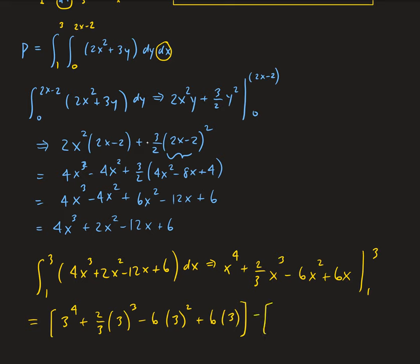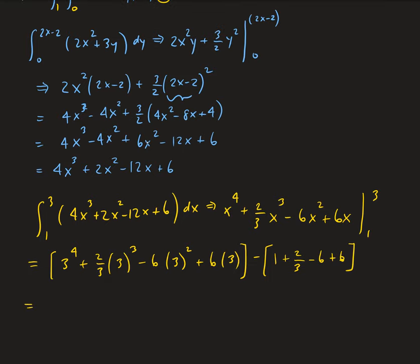We subtract the value at x = 1: 1⁴ + (2/3) − 6 + 6. The first part evaluates to 63, and the second part is 5/3. So 63 − 5/3 = 184/3.